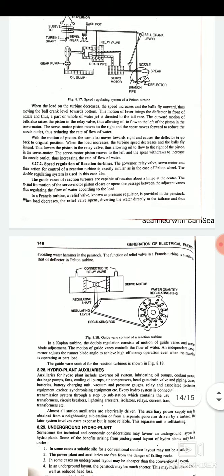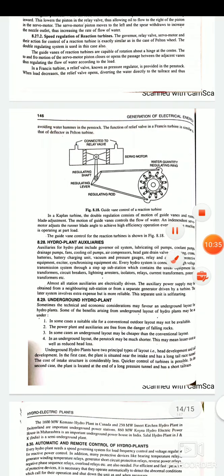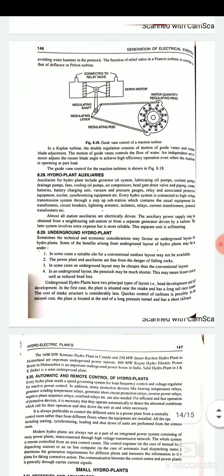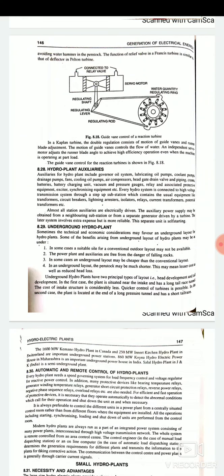Now the speed regulation of reaction turbines. The governor relay valve servo motors and direction for control of a reaction turbine are actually similar as the case of Pelton wheel. The double regulating system used in this case also. The guide vanes of reaction turbines are capable of rotation about a hinge at the center. The to and fro motion of the servo motor piston closes or opens the passages between the adjacent vanes, thus regulating the flow of water according to the load. So this is the guide vanes control of a reaction turbine that is in Francis turbines and in Kaplan turbines. That uses the double regulation consists of motion of the guide vanes and runner blade adjustments.